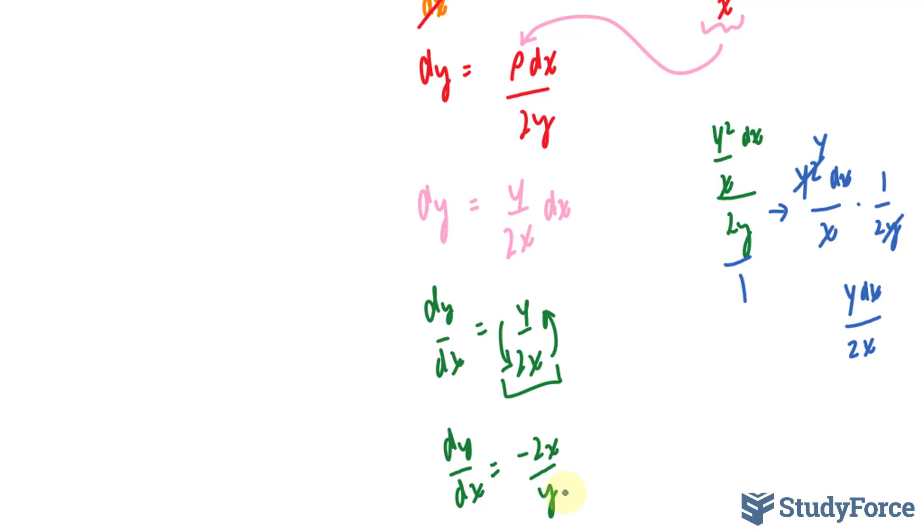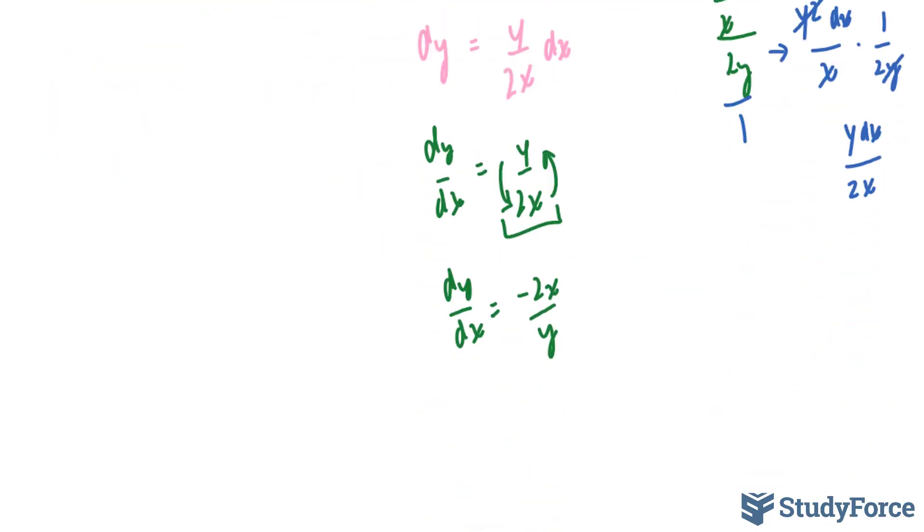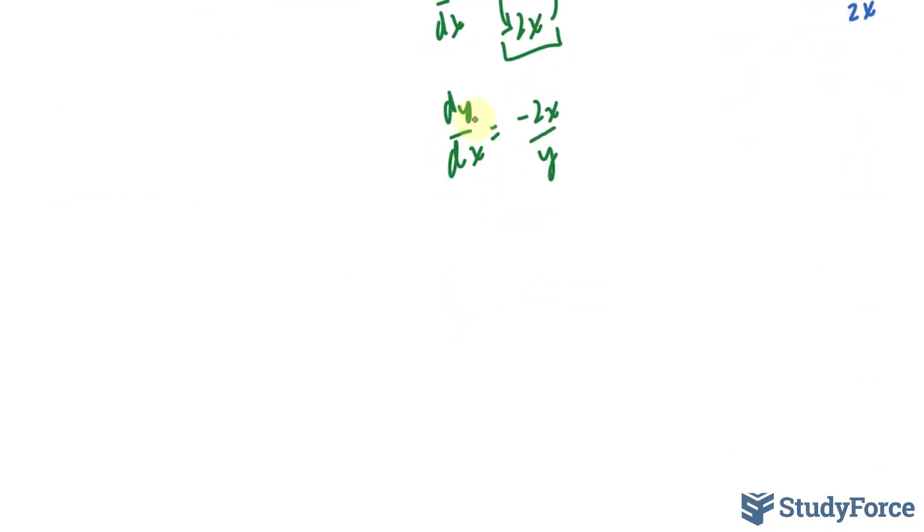And now we do just like how we always do, which is to solve the resulting differential equation. Let's go ahead and do that. We'll separate these terms where we have x's on one side, y's on the other side. I'll start by multiplying both sides by dx. Multiplying this by dx cancels that out. And multiplying both sides by y gives me dy times y = -2x dx.